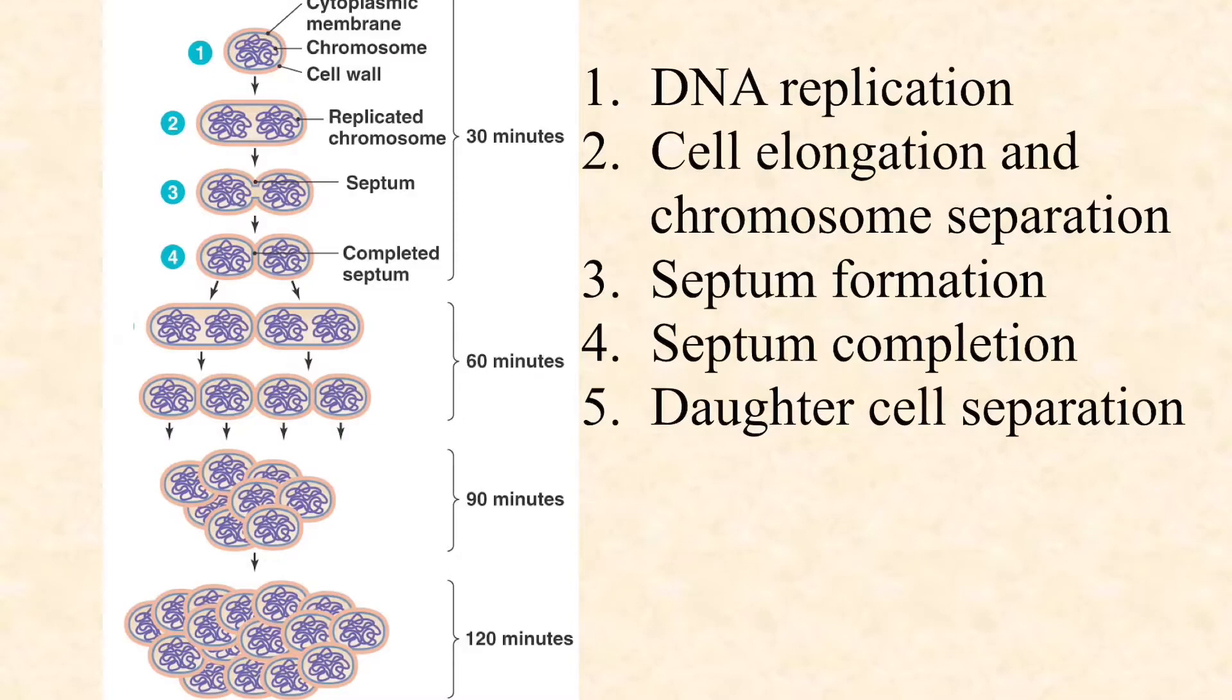The cell can then undergo multiple rounds like you see here, and you get either a colony or a broth culture or a biofilm of the various forms of microbes that we see, and we see those different arrangements as well.